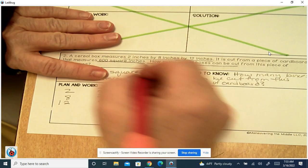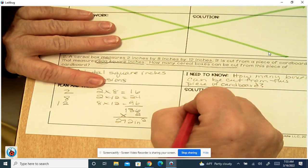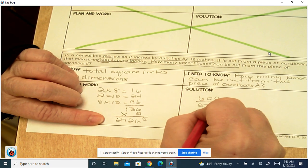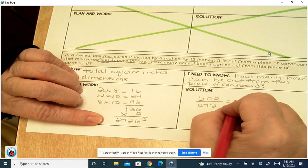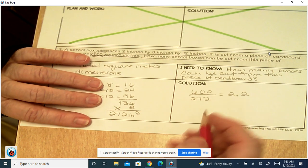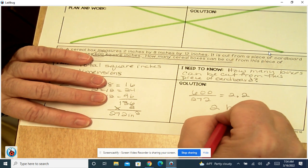So we're going to take that 600 total that we have and divide it by 272 to see how many we can make. When we do that, we get 2.2. Well, you know, we can't make 0.2 of a box, so two boxes can be made.